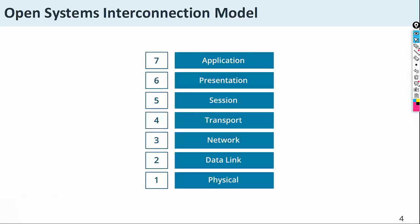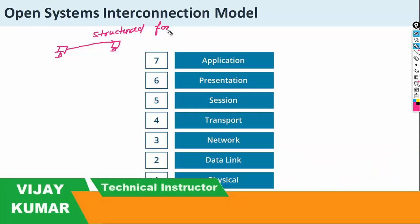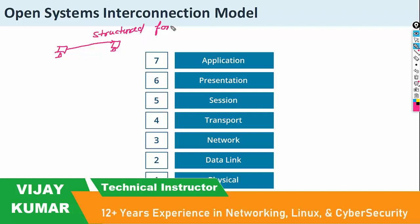So what is the OSI model layer? When data is transferring from one device to another device, this device is transferring the data in a structured format. It is not sending the data as usual — it is sending the data in a structured format.